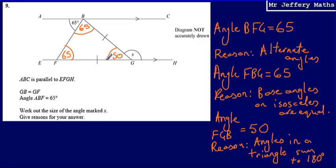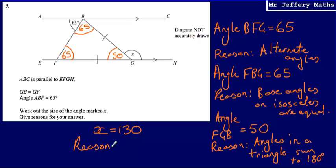Finally, I can see that angle 50 and X are on a straight line. So X will be equal to 130 degrees. The reason is that angles on a straight line sum to 180.